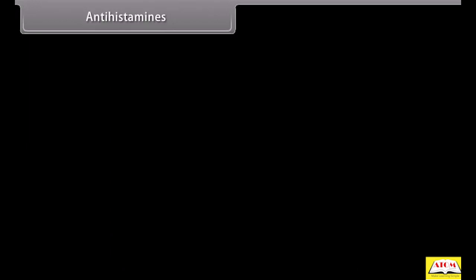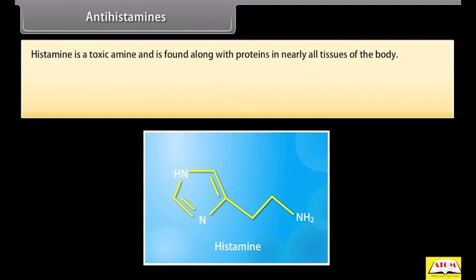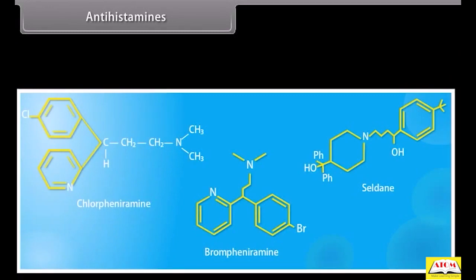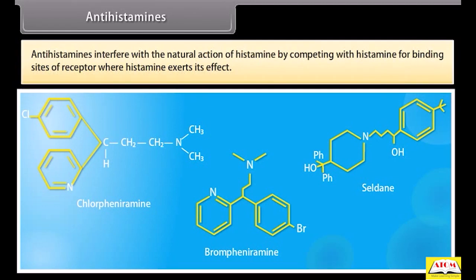Antihistamines: histamine is a toxic amine found along with proteins in nearly all tissues of the body. Sensitizing substances called antigens — derived from food products, pollens, dust, human hair and sheep wool — may cause the release of free histamine, which produces symptoms associated with allergies, hay fever and the common cold. An antihistamine relieves these symptoms by blocking the action of histamine. For example, clofenarimine, brofenarimine and celdane. Antihistamines compete with histamine for binding sites of the receptor where histamine exerts its effect.